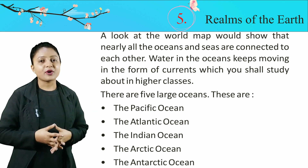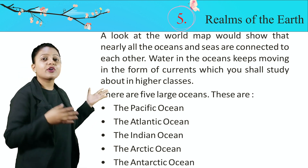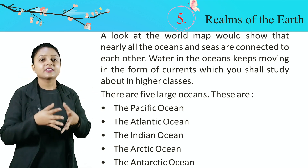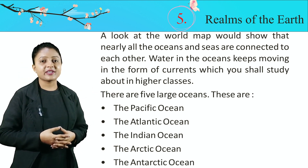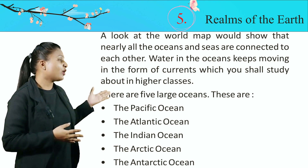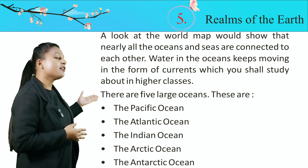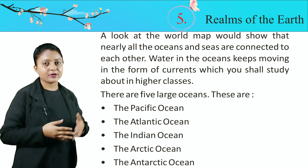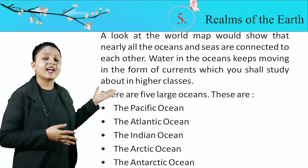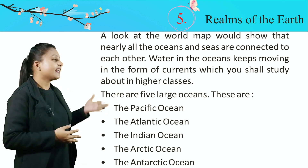Oceans bahut badi badi paani ki bodies hain jinke andar ka water saline hai. Yeh kai thousands of kilometers tak hain. Nearly 5 bade bade oceans hain world mein: Pacific Ocean, Indian Ocean, Arctic Ocean, Antarctic Ocean, and Atlantic Ocean.